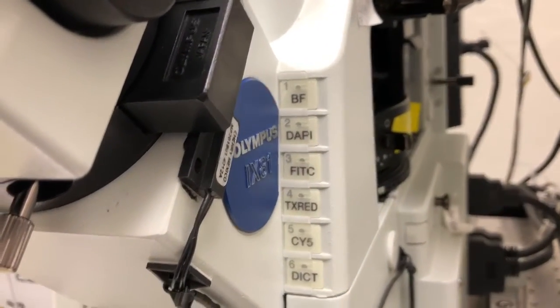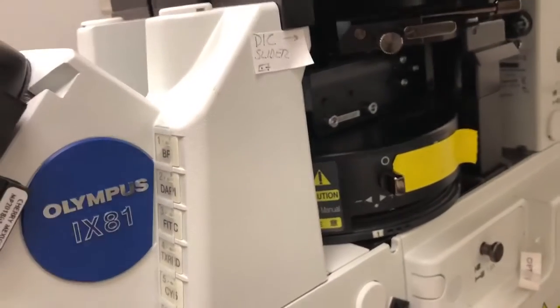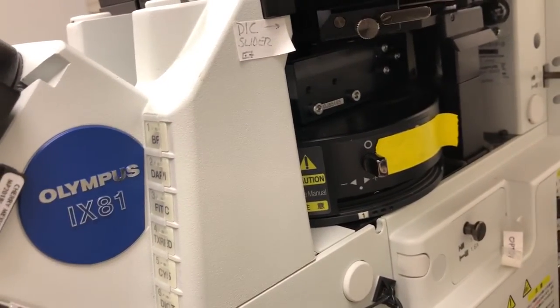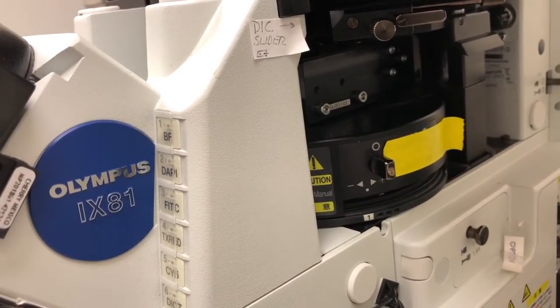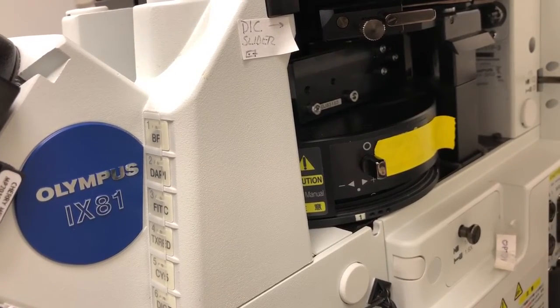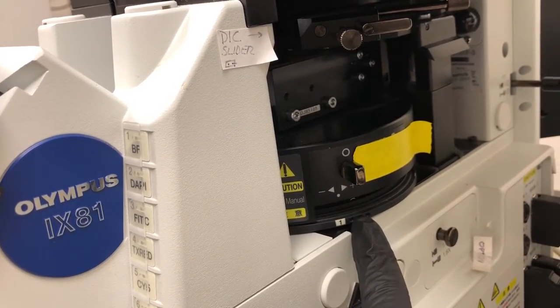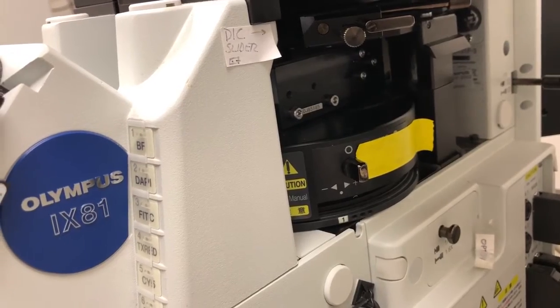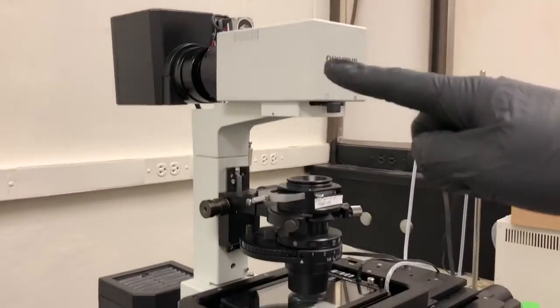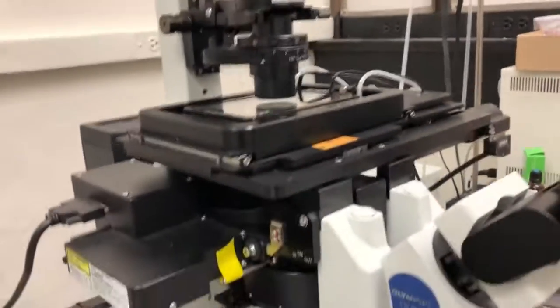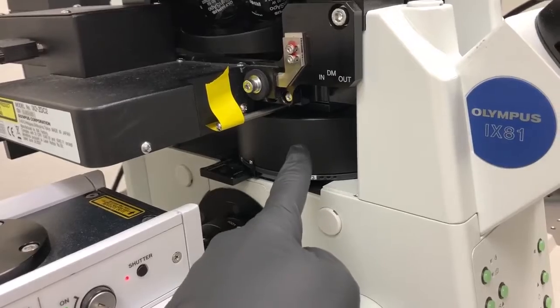So typically for a quick and dirty brightfield, we will use position one. Note that position one is also the position in which we're going to place things if we need to actually image using the spinning disk confocal. Position one is where it is right now, so we're going to leave that as it is. So far, what we have is light reaching the sample and then going through the right cube beneath the sample.